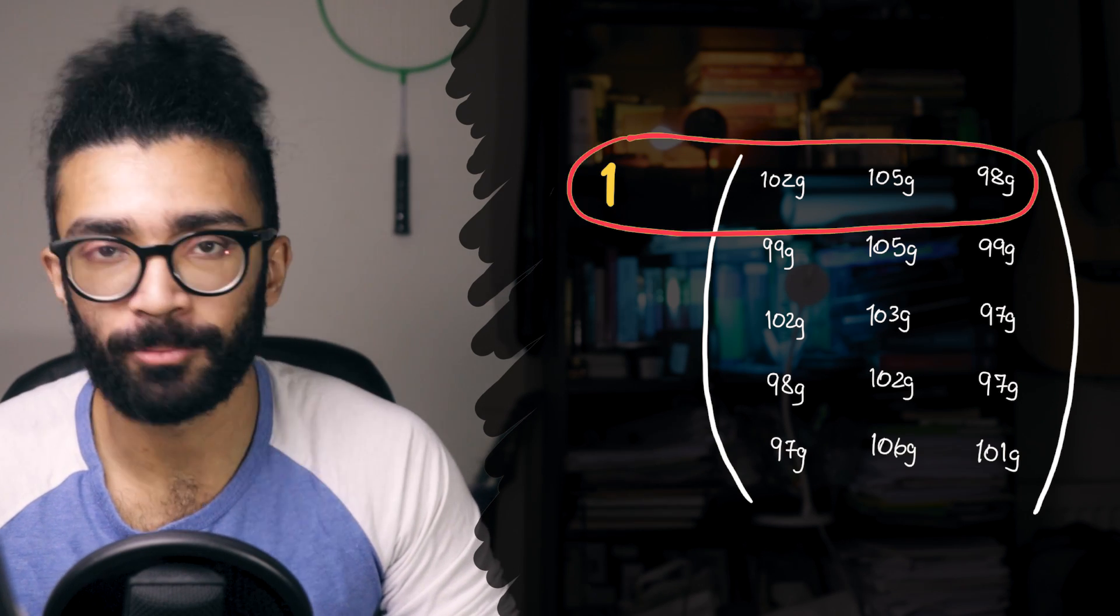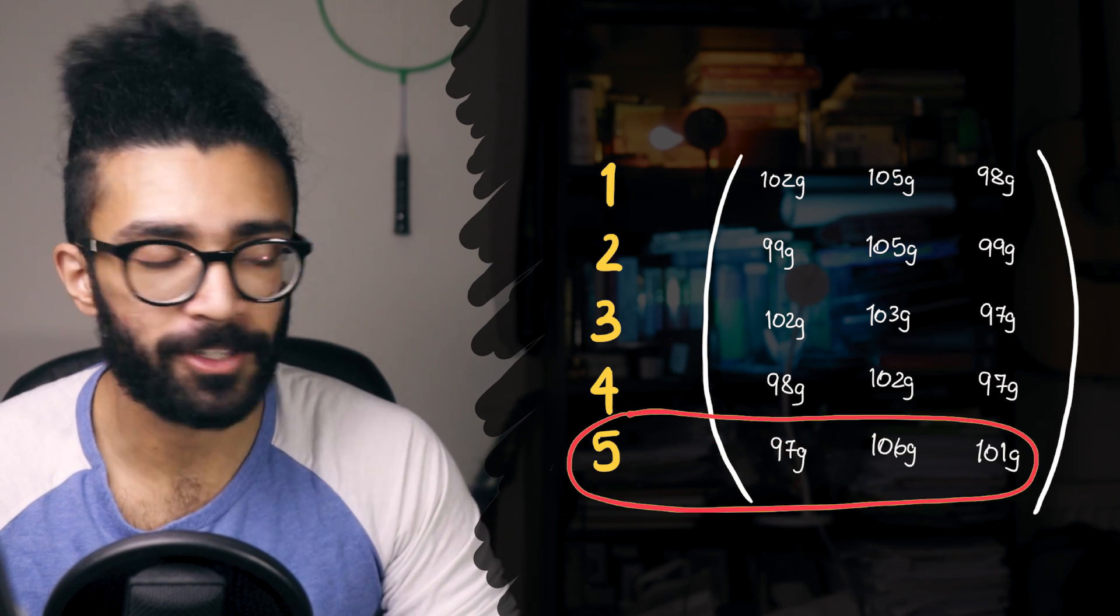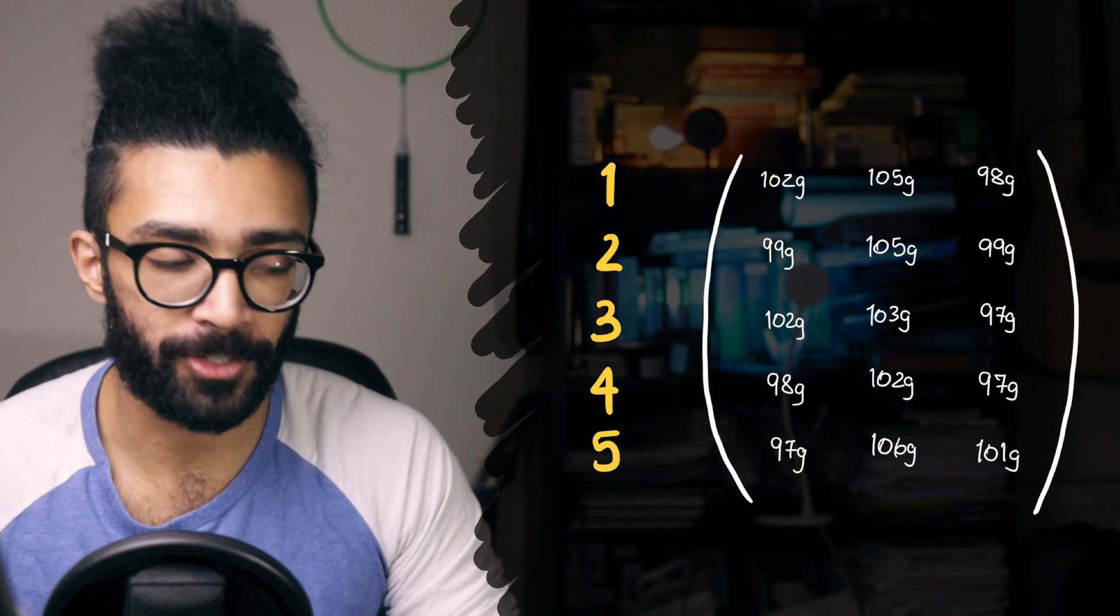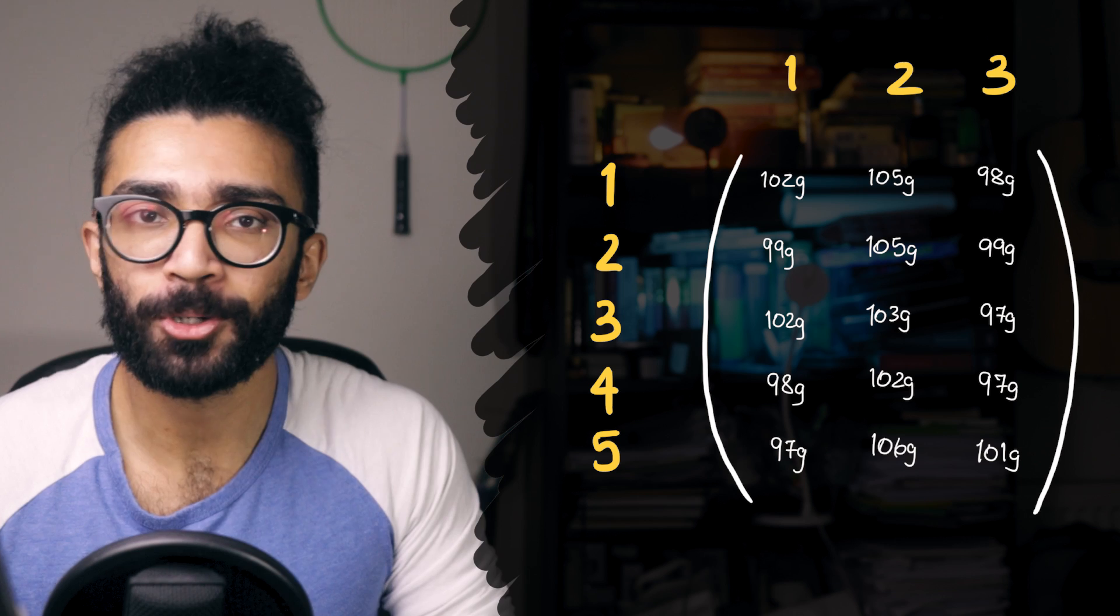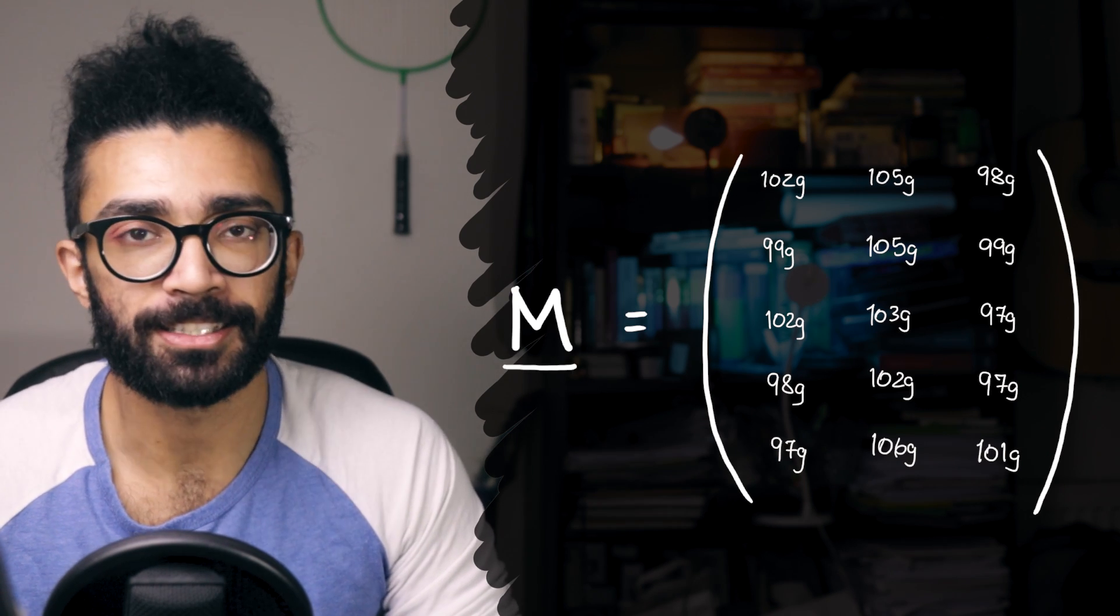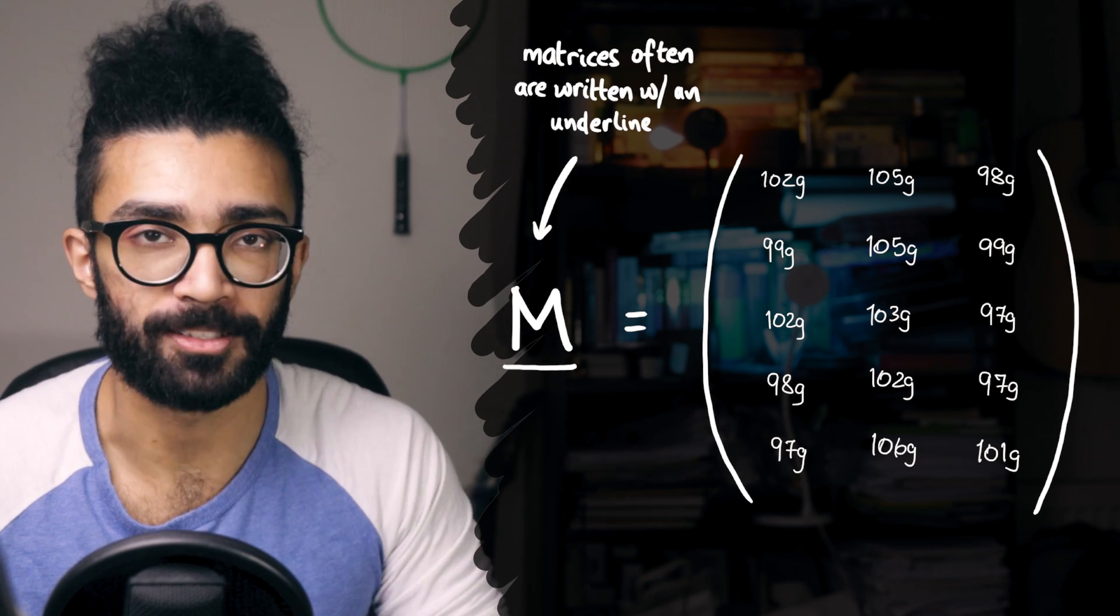Notice that each row refers to a specific bag. Bag one, bag two, bag three, bag four, or bag five. And each column refers to a specific number of apple, or in this case, specific color of apple. And we can call this matrix M, since it contains all the information about the masses of these apples.